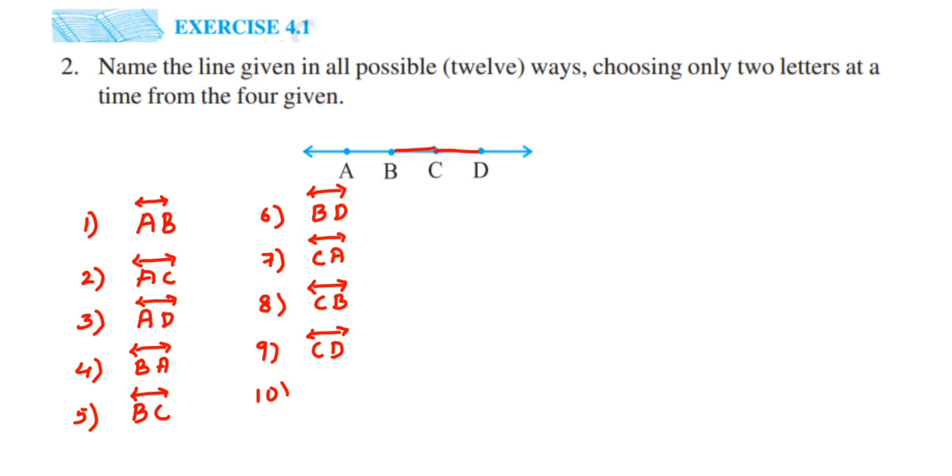Then next one I am going to do all the combinations with D now. So it will be like DA, DB, and DC. So DA, DB, and the next will be DC.